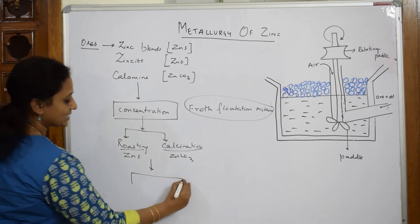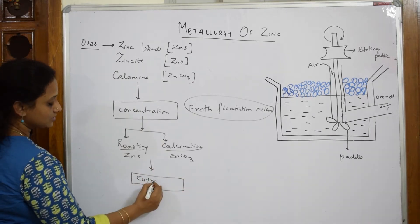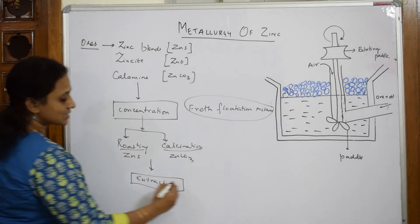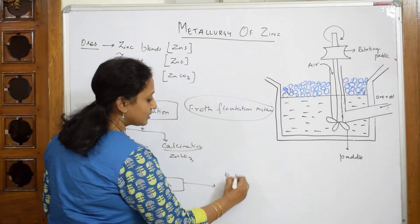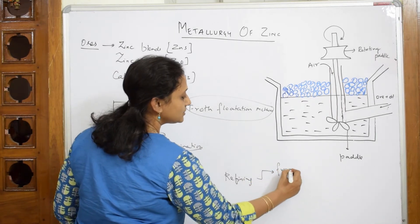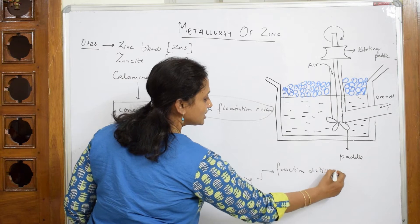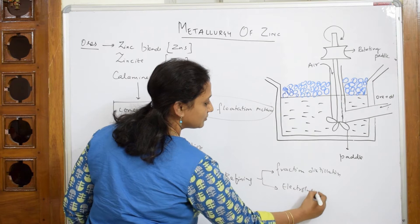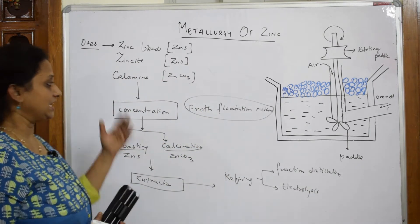After roasting and calcination, we are going to take it for a process called extraction — further extraction by reduction process. After extraction, we are going to take it for refining. In refining, we are going to do two processes: one is fractional distillation based on the boiling point, and the second is electrolysis. These two are the methods I am going to explain, and this covers the whole zinc topic.